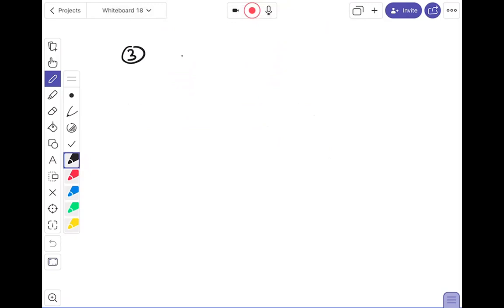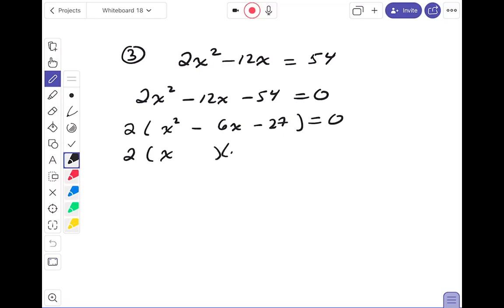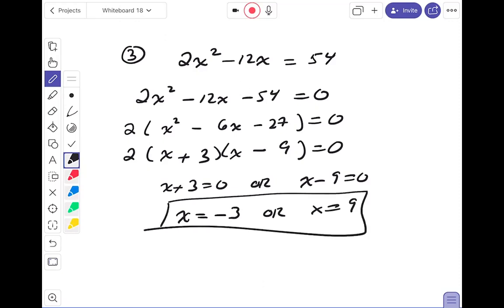Number three, solve by factoring. My first step is to get a zero by subtracting 54 from both sides. I'm going to factor that. There's a GCF which is two. I get x squared minus six x minus 27. I'm going to keep factoring: two times x and x, nine and three, minus nine plus three. Set the factors equal to zero. Two is never equal to zero, so x plus three could be zero or x minus nine could be zero. So x equals minus three or x equals nine.